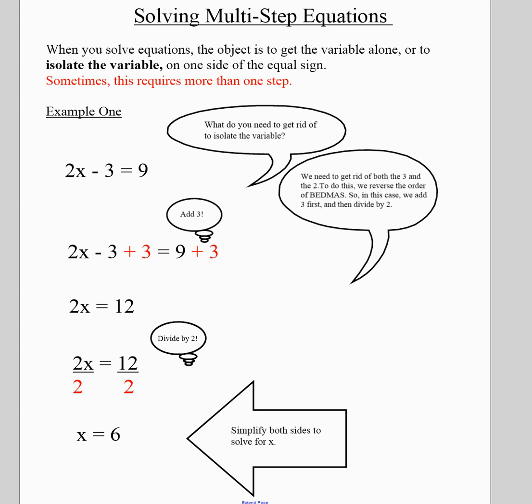If we look at this first example, 2x minus 3 equals 9, just like we've been practicing with simple equations, you have to ask yourself, what do I need to do, or what do I need to get rid of, to just have x? The first thing we need to get rid of is subtracting 3.